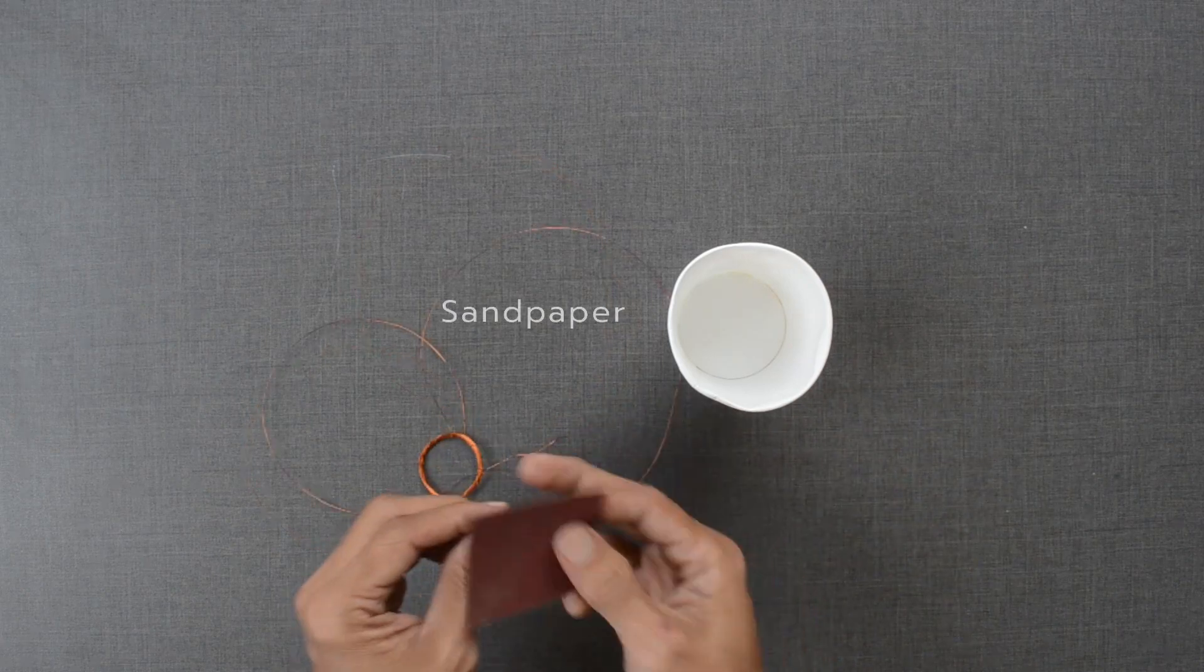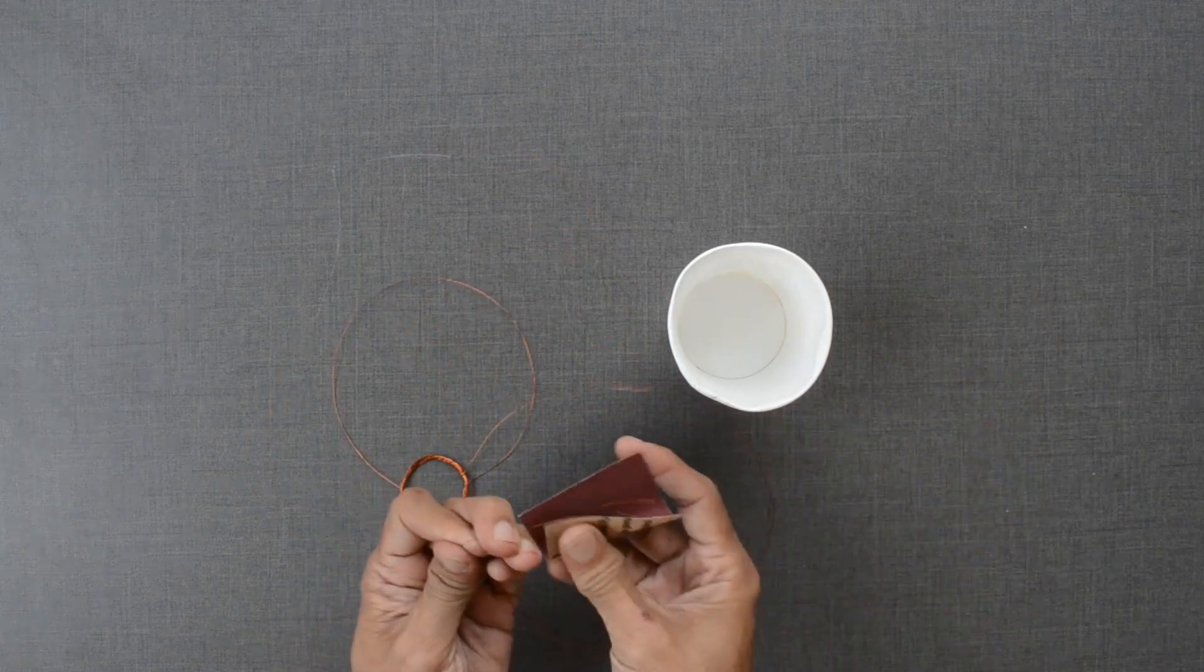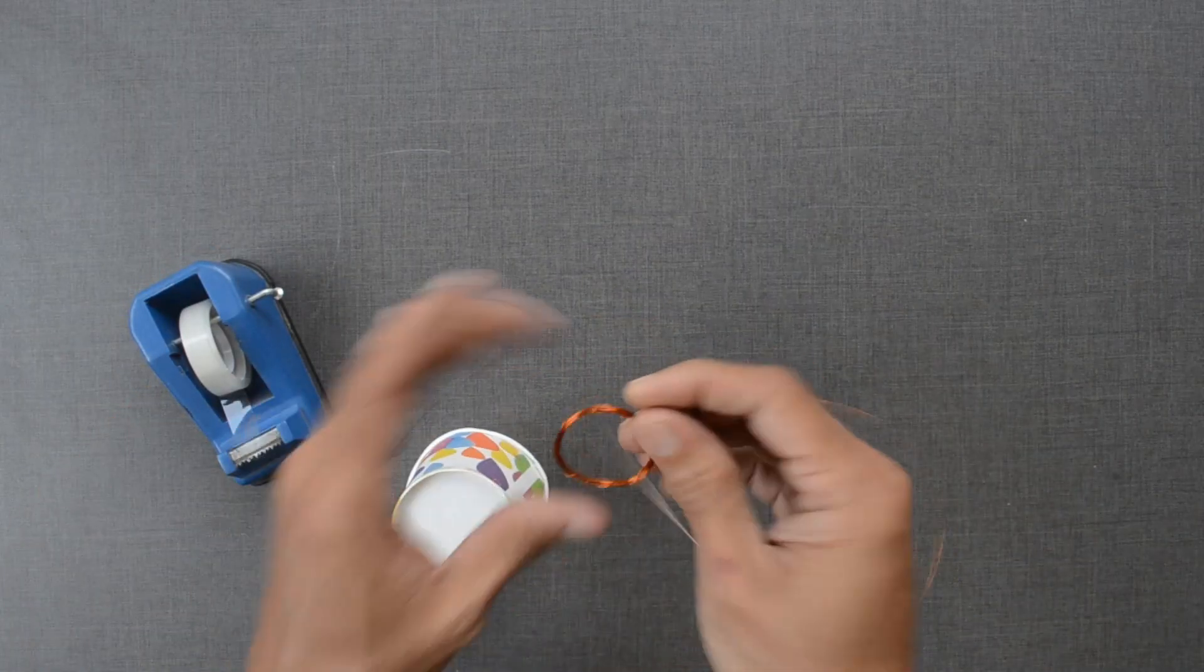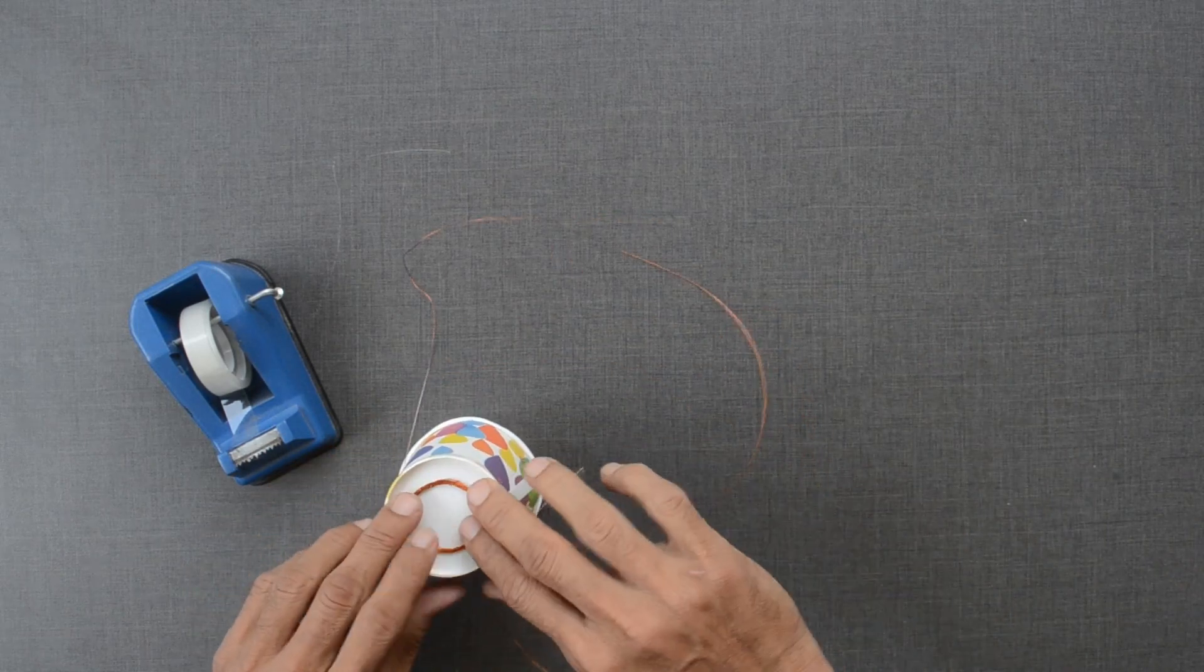Let us remove the coating with the help of sandpaper. Now let us stick it with the help of tape to the bottom of this paper cup.